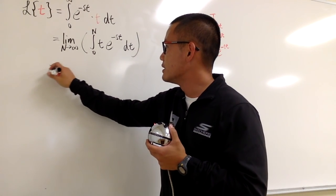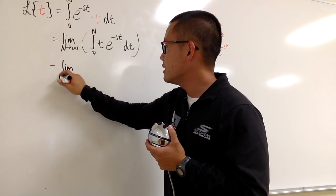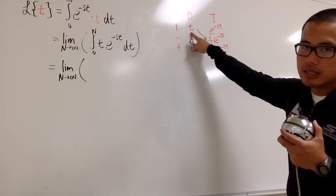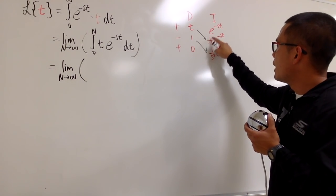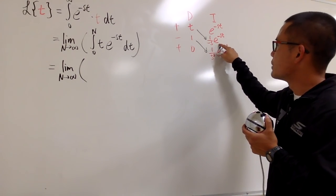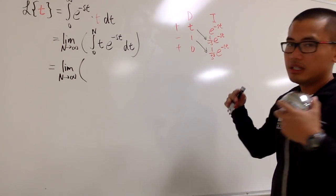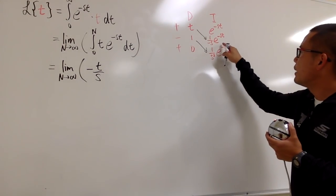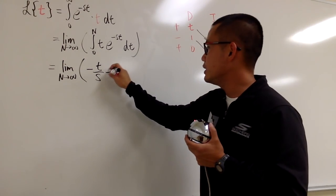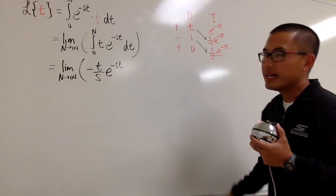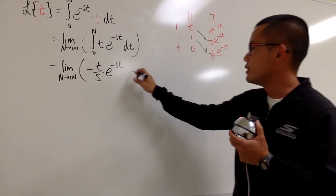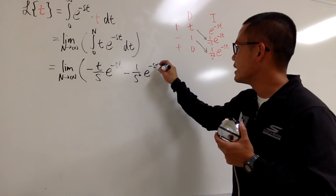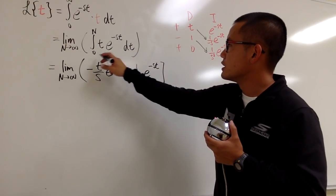The result of the integrations is just going to be this times this, and this times that. So this is still the limit as n goes to infinity. Positive times negative is negative first, so we have negative t over s times e to the negative st. And then we have negative 1 times 1 over s squared, giving negative 1 over s squared times e to the negative st.